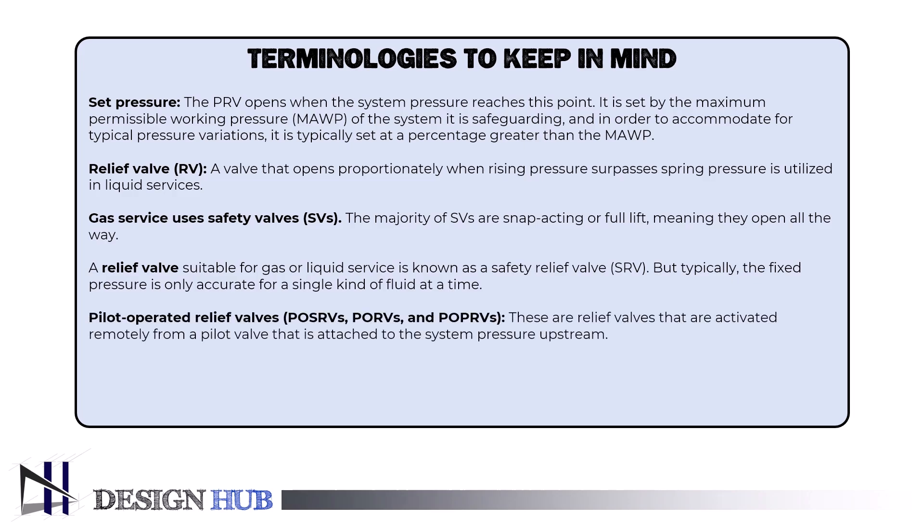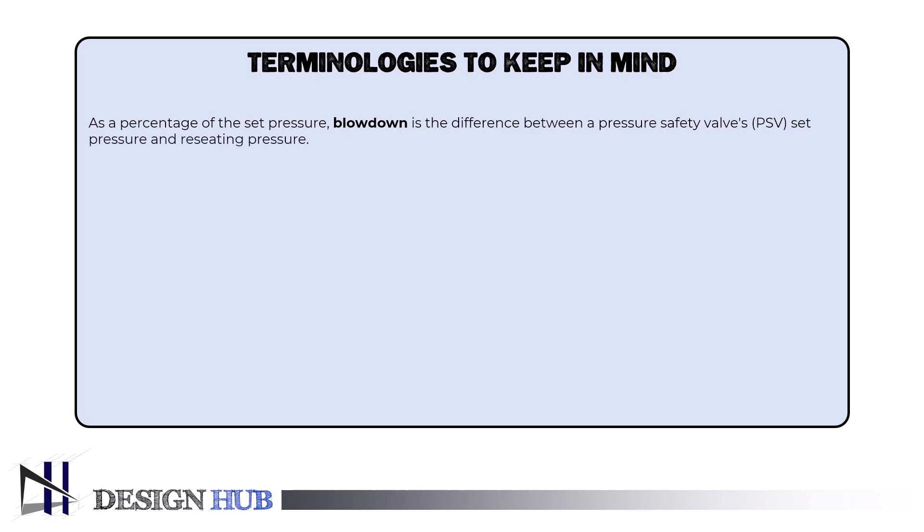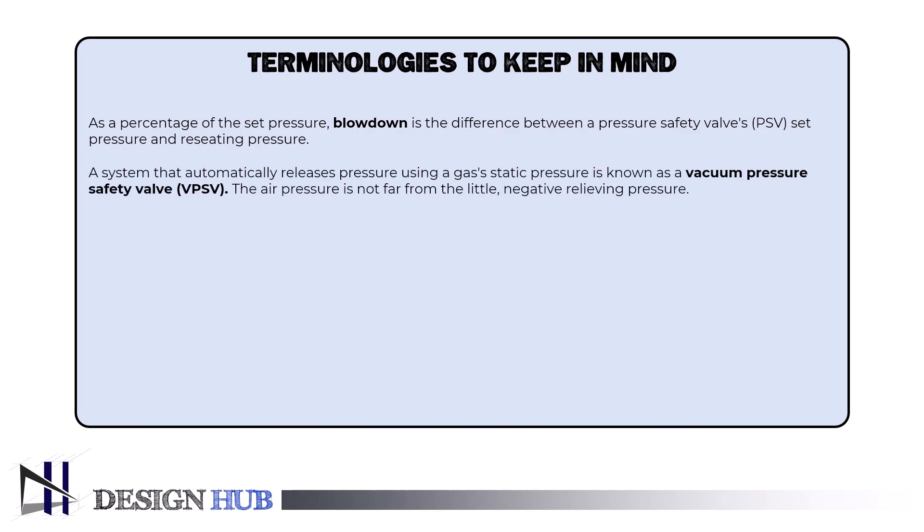Sixth is the low-pressure safety valve, LPSV: an automated mechanism that releases pressure using a gas's static pressure, with little relieving pressure close to atmospheric pressure. Seventh is differential pressure: blowdown is the difference between a PSV's set pressure and receding pressure, expressed as a percentage of the set pressure. Eighth is a vacuum pressure safety valve, VPSV: a system that automatically releases pressure using a gas's static pressure, with air pressure not far from the little negative relieving pressure.